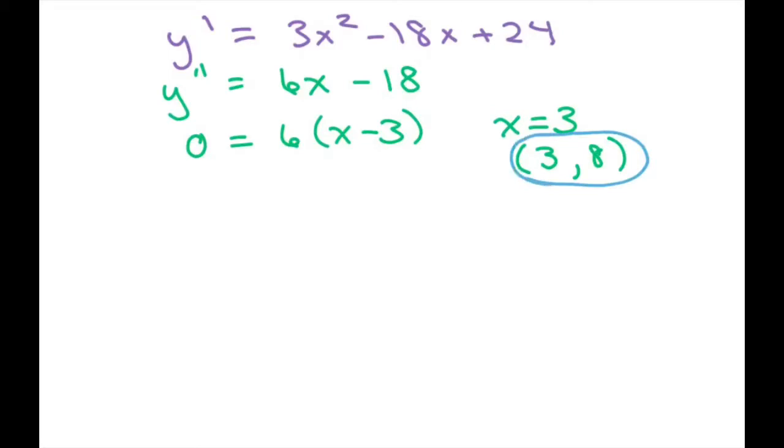So again we have our (3, 8), we have our (2, 10), and our (4, 6). These are our critical points. This is our point of inflection.